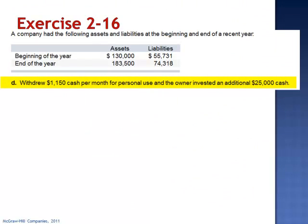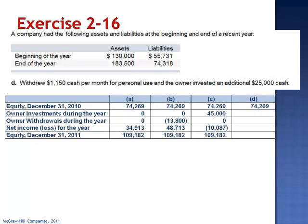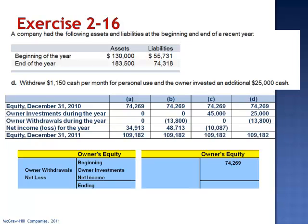Company D: the owner withdrew $1,150 cash per month for personal use, and also invested an additional $25,000 in cash. Beginning equity is $74,269, plus $25,000 in investments, minus $1,150 per month multiplied by 12 months — total withdrawals of $13,800 — and an ending equity balance of $109,182. Looking at the T-account: $74,269 plus $25,000 minus $13,800, either plus net income or minus net loss equals $109,182.